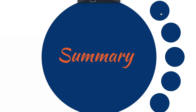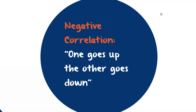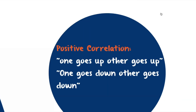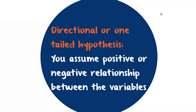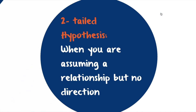To summarize: a negative correlation is when you specify that when one variable goes up, the other goes down. A positive correlation is when one variable goes up and the other also goes up, or one goes down and the other goes down — both variables moving in the same direction. When you assume a positive or negative correlation between variables, it is called a directional hypothesis or a one-tailed hypothesis. A two-tailed hypothesis is when you assume there is a relationship but do not specify the direction.